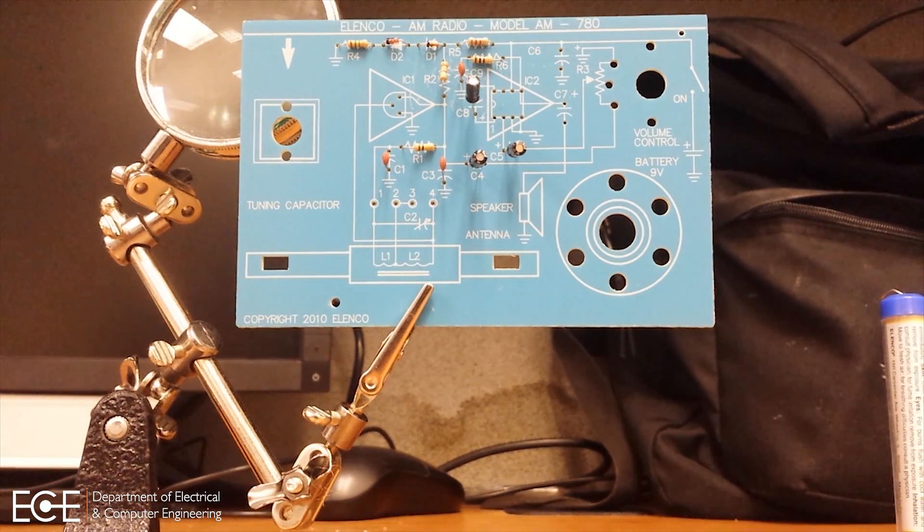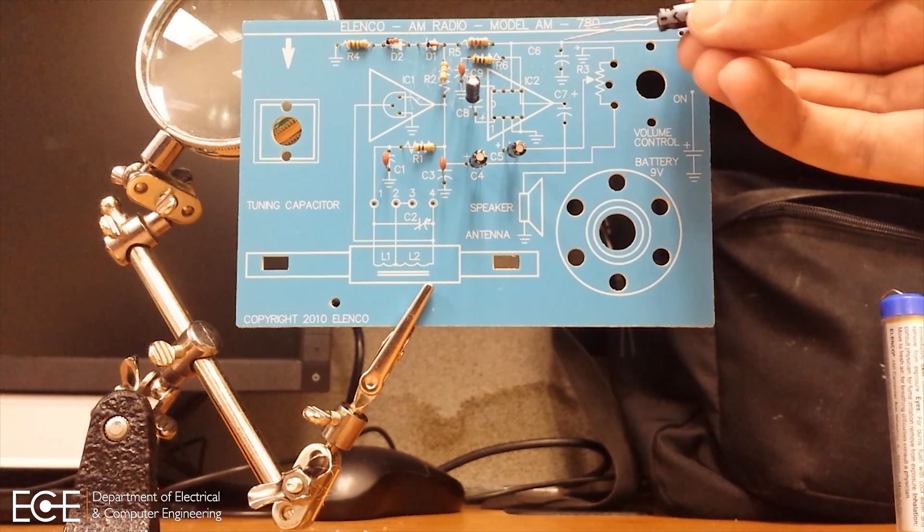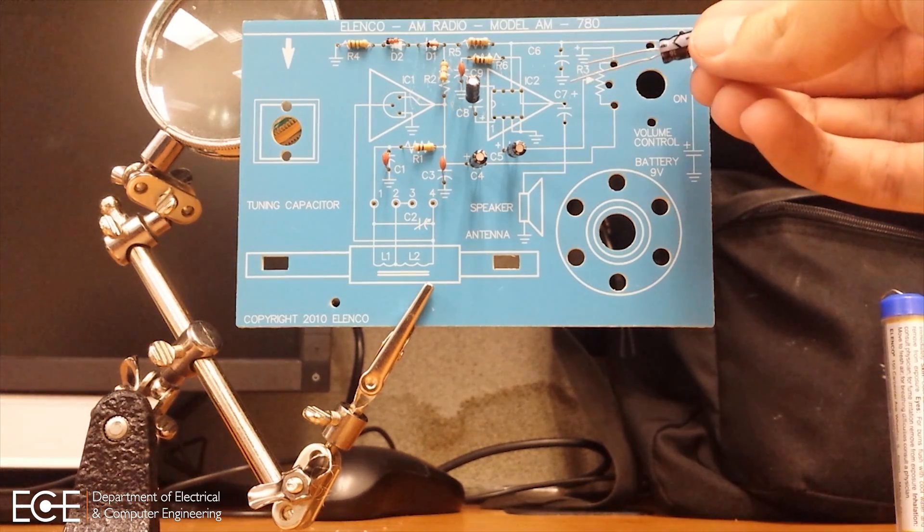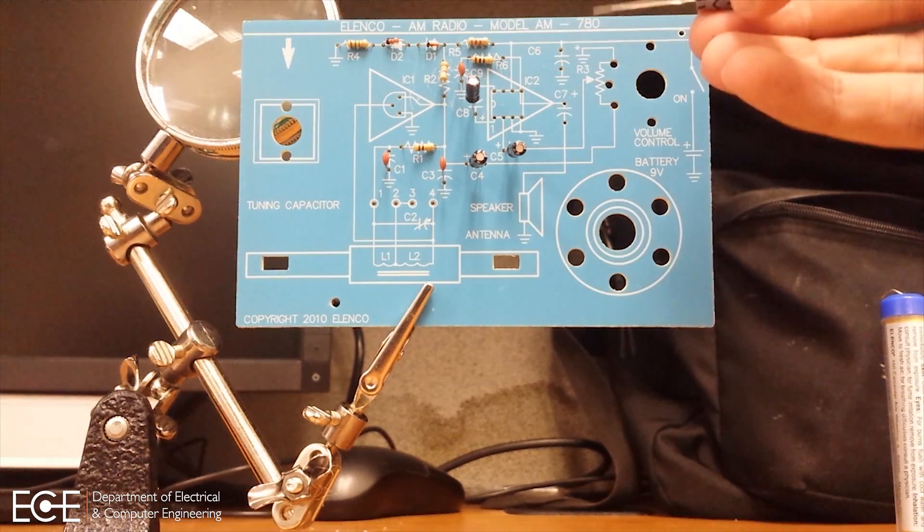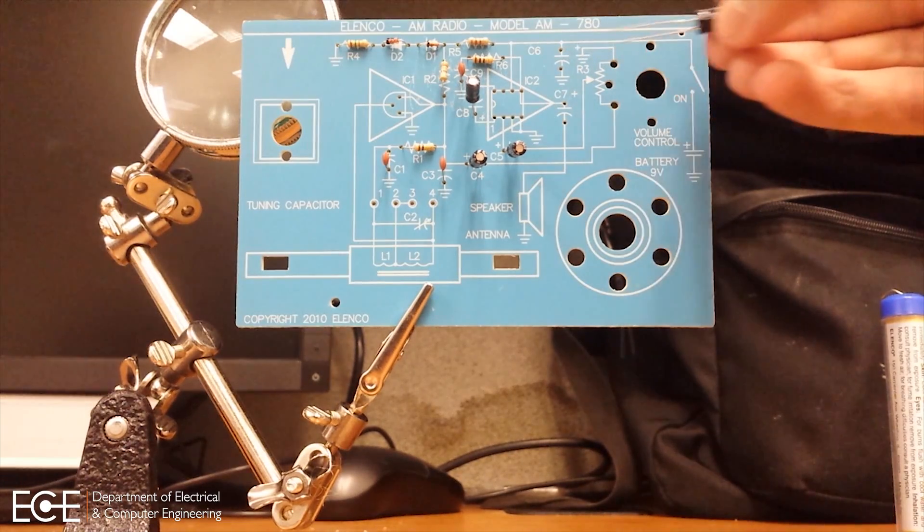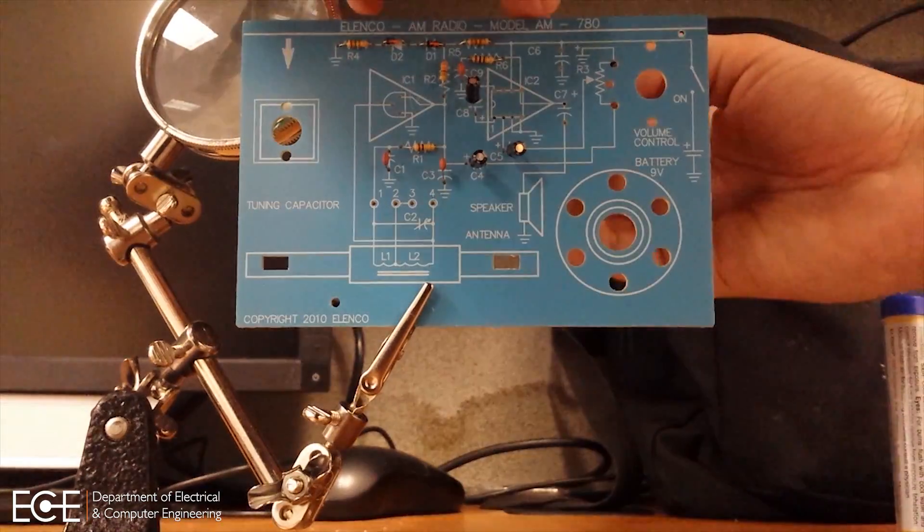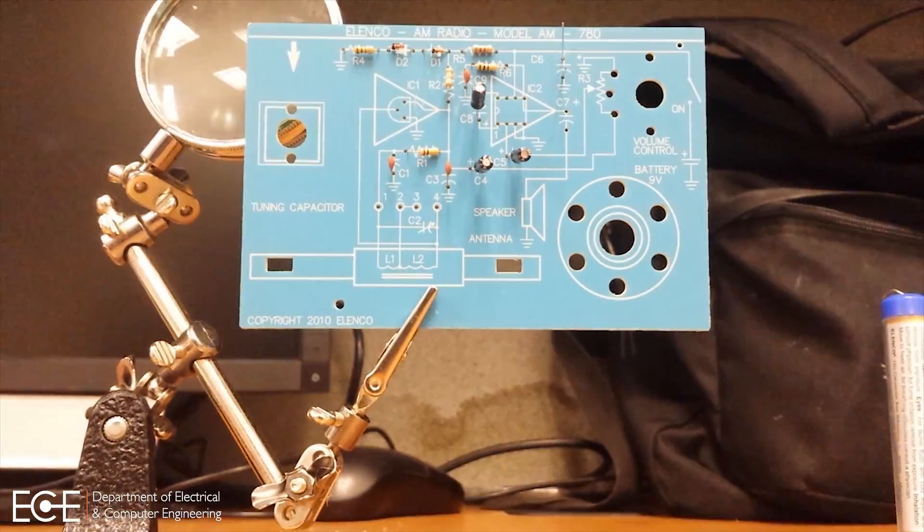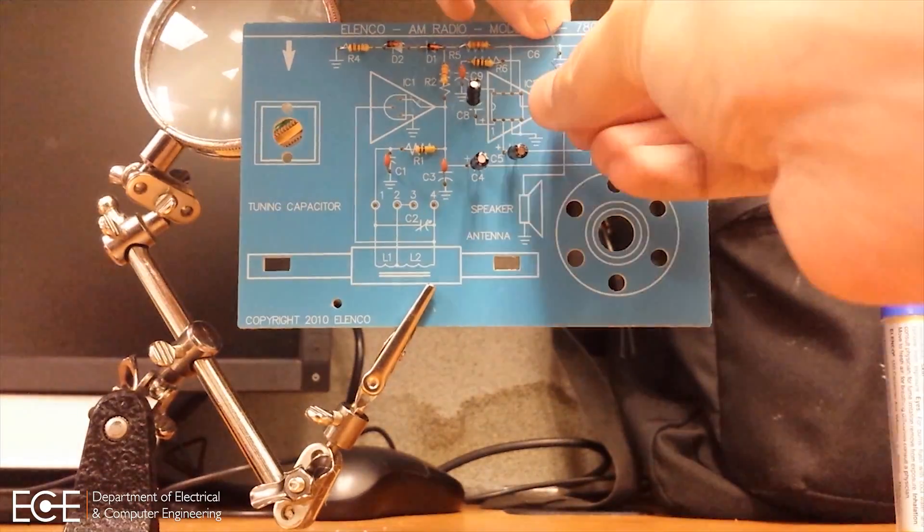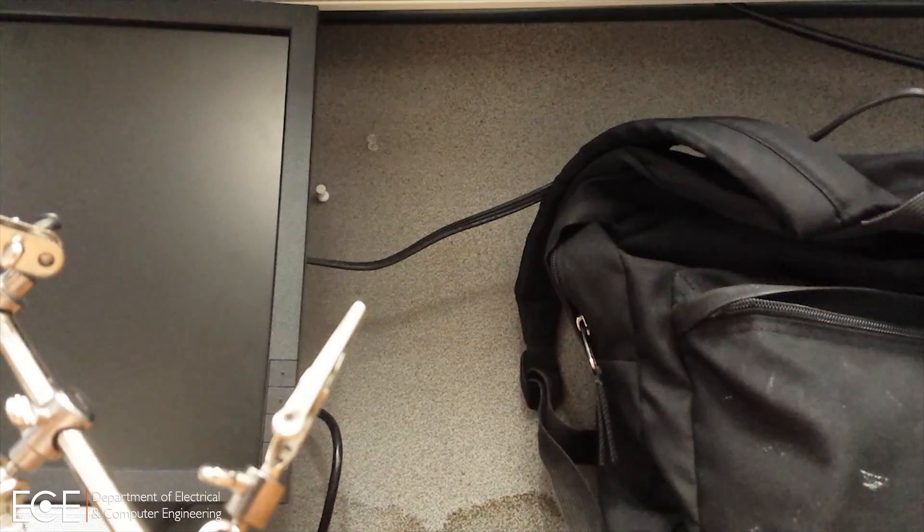The cylindrical capacitors are the ones that are polarized. They have a negative marking on the side, gray, and indicates that it's the negative side. C6 actually has to be placed on the back side of the circuit. Make sure that the negative lead is facing the south side of the board, and it'll go through the back. C7 will go through the front like the others.